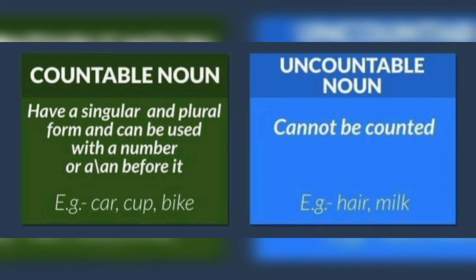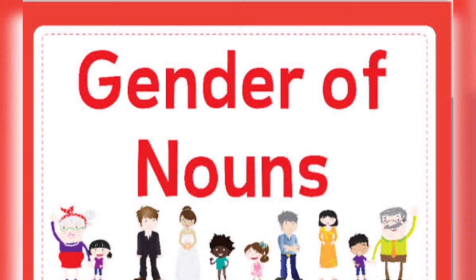An uncountable noun is a noun that cannot be counted, and uncountable nouns do not have plurals. For example, hair and milk.